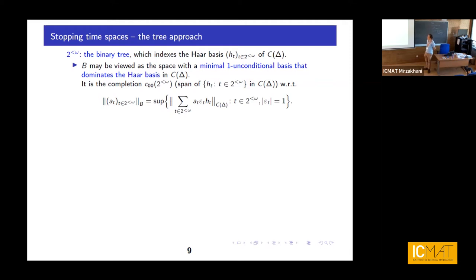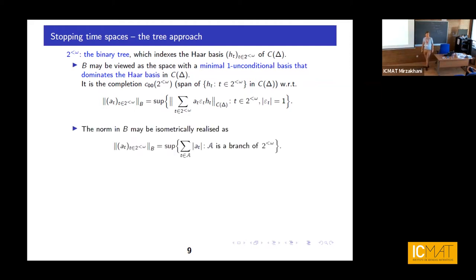The space B, which is supposed to resemble the space of continuous functions, can be identified as the space with a minimal unconditional basis that dominates the Haar basis in the continuous functions on the Cantor set. You work with finitely supported vectors on the dyadic tree, compute the norm in the space of continuous functions, alternate the signs, take the supremum, consider those for which the supremum is finite, and pass to the completion. For instance if you're familiar with the Pelczynski space, it is a similar trick.